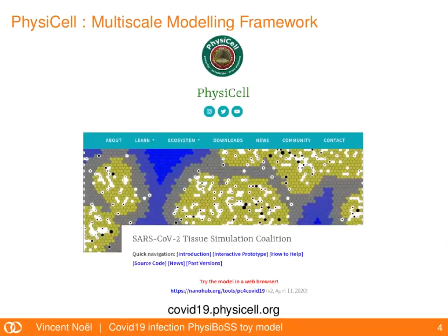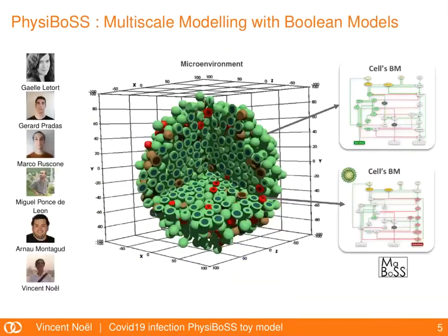People from PhysiCell already have some COVID simulation that they are working on. The problem for us is that they started using differential equations, so it's not easy to put Boolean models into it. So I started something brand new but still reusing some of their cell definitions to be able to have some parameters. The idea with PhysiBoss is to have Boolean models running inside each cell of the simulation.